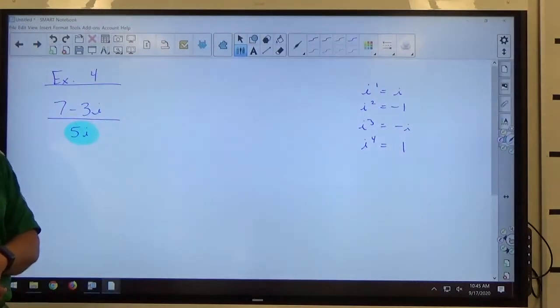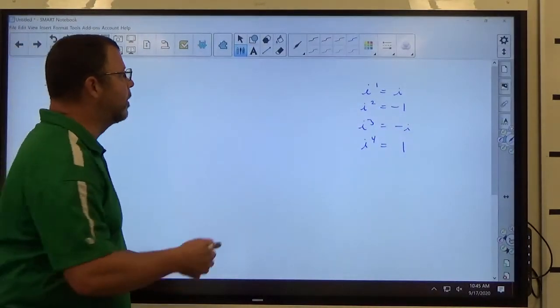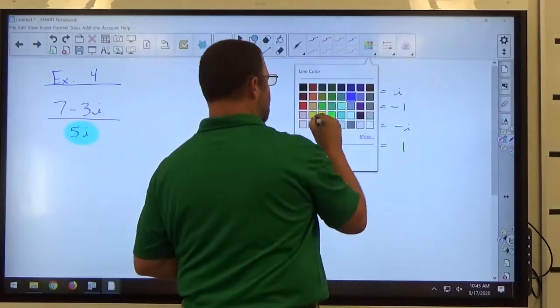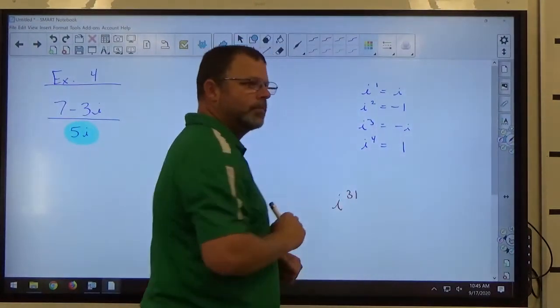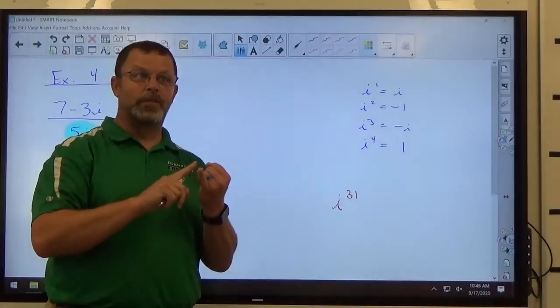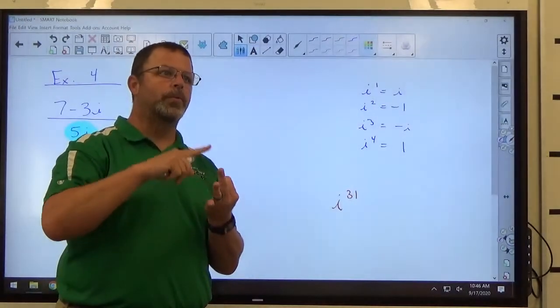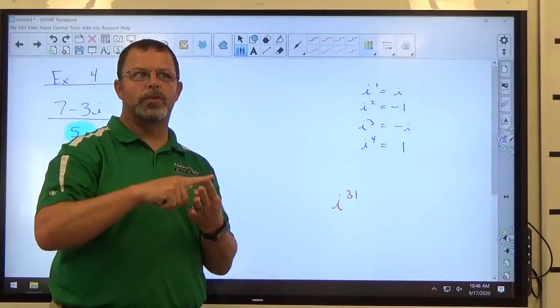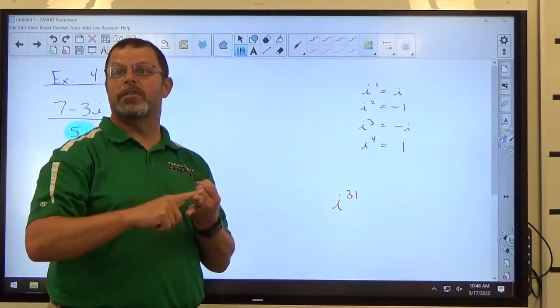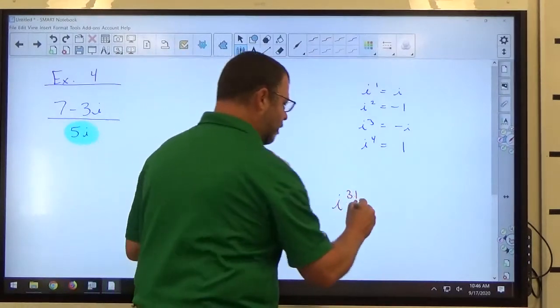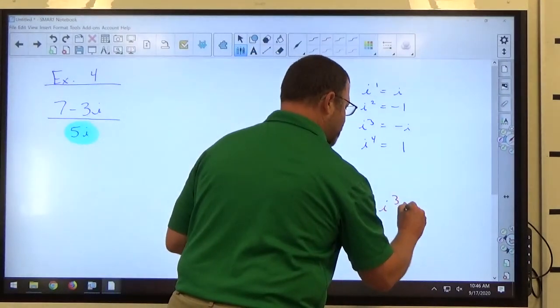So for example, just to give you a quick example of what I'm talking about there, if I have i to the 31st power, 31 minus 4 is 27, minus 4 is 23, minus 4 is 19, minus 4 is 15, minus 4 is 11, minus 4 is 7, minus 4 is 3. So i to the 31st is the same as i to the third, which is negative i.